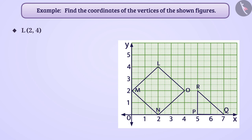Similarly, we see that x coordinate of vertex M is 0 and y coordinate is 2. Hence, the coordinates of the vertex M are 0, 2.